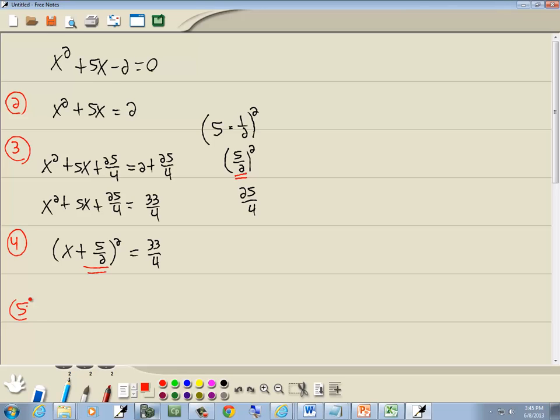Step 5. Use the square root property to solve for x. The square root property says if you've got something squared equals something else, you drop your squared. So I've got x plus 5 halves. And then you put a plus or minus square root around the other side.